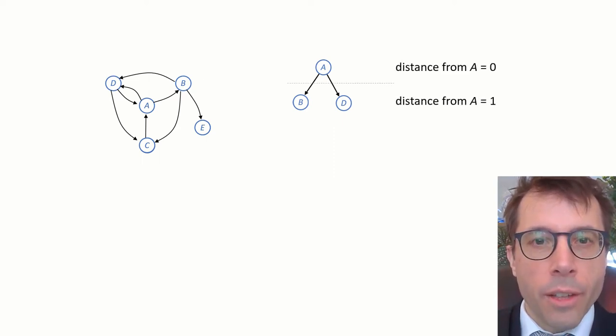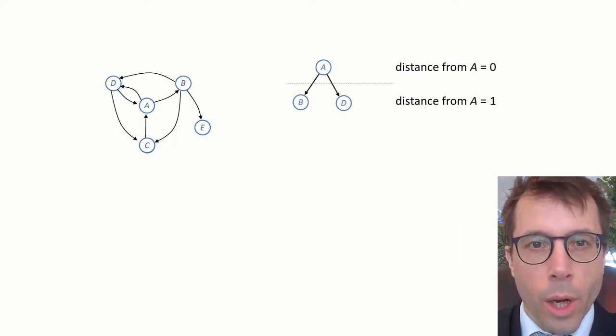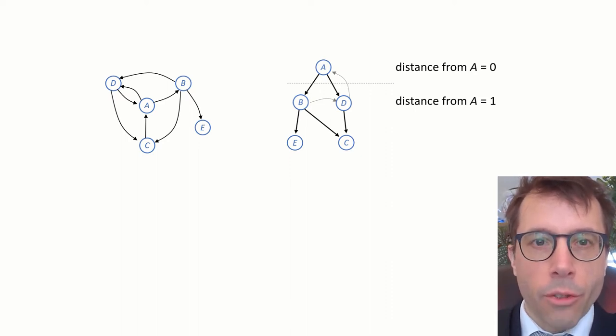I'll say that A is at distance 0 from A, and its neighbors are distance 1. Next I'll look at these two new vertices B and D, and I'll scan through all their edges. Some edges can bring me to new vertices E and C, and other edges take me back to parts of the graph I've already seen. Let's label the new vertices as being at distance 2 from A.